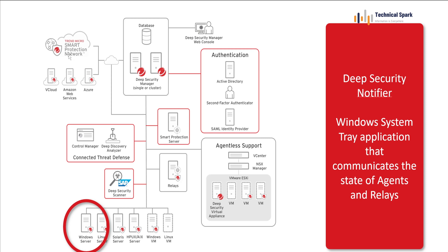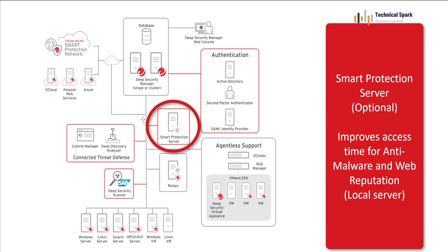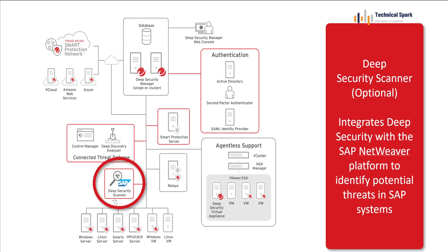The Smart Protection Network is a cloud-based Trend Micro network that delivers signatures and patterns to your Deep Security Managers on a timely basis. The Smart Protection Server is also very important. If you are trying to visit a URL and it's new, by default Trend Micro agents go to the cloud to check the reputation for that file. If you don't want your agents to directly communicate to the Trend Micro Smart Protection Network, you can configure one Smart Protection Server in your environment so that reputation checks happen locally, and that server receives updates from the cloud.